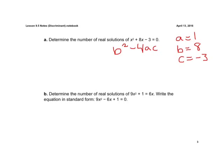And we're just going to plug in and solve. So we have b squared, which is 8 squared, minus 4 times our a value, which is 1, times our c value, which is negative 3. Alright, order of operations, we need to do exponents first. So we have 64 minus, we have 4 times 1 is 4, 4 times negative 3 is going to be a negative 12.